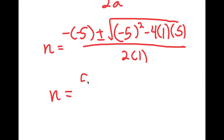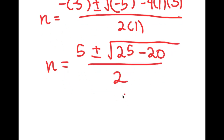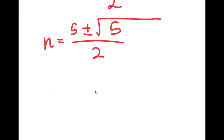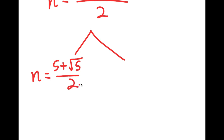This is equal to positive 5 plus or minus the square root of 25 minus 20, all over 2, which is equal to 5 plus or minus the square root of 5 over 2. This can't be simplified anymore, so n equals 5 plus or minus the square root of 5 over 2, which gives two solutions: n₁ equals 5 plus the square root of 5 over 2, and n₂ equals 5 minus the square root of 5 over 2.